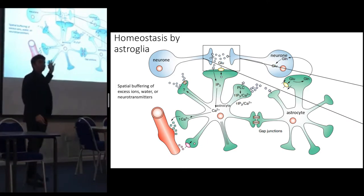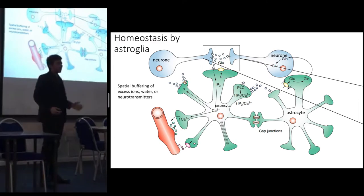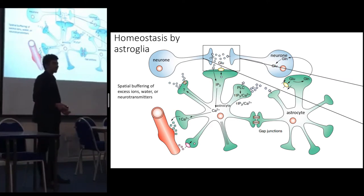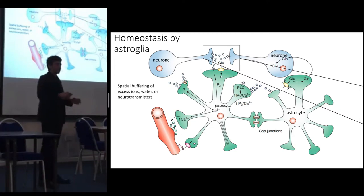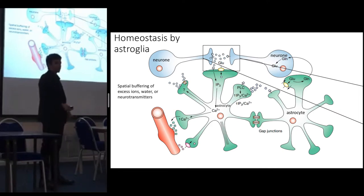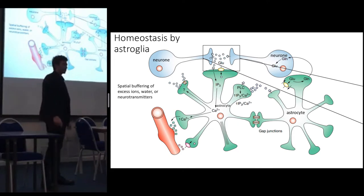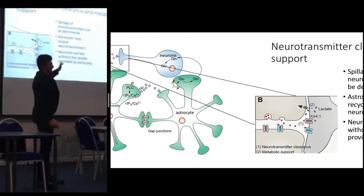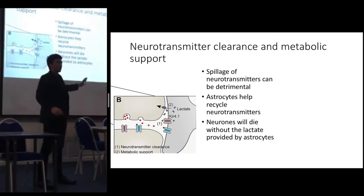Spatial buffering handles excess ions, water, or neurotransmitters. When spatial buffering doesn't work efficiently, you get water buildup in one region and neurons failing to fire because the membrane potentials are disrupted. These conditions might be associated with neurodegeneration, stroke, or migraines — pretty serious consequences.